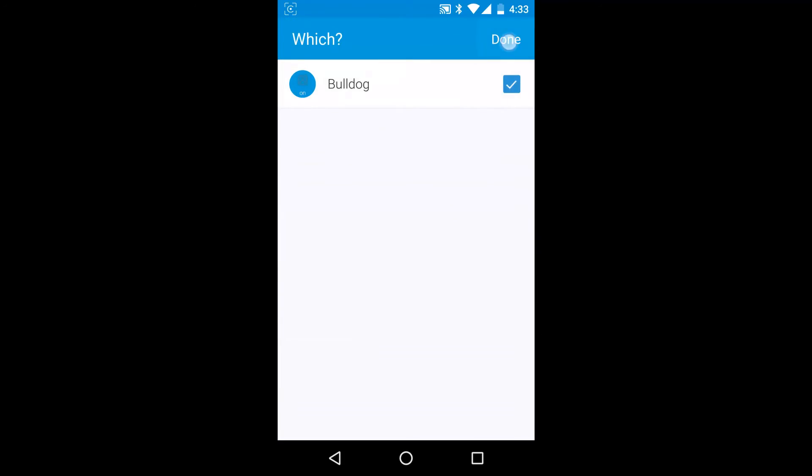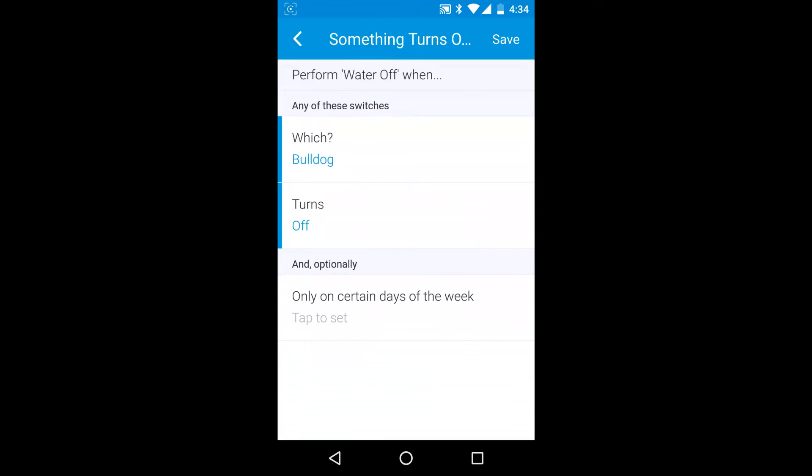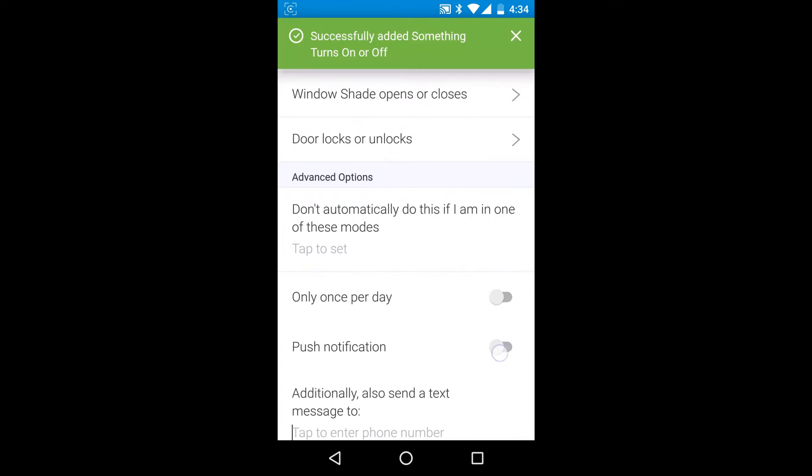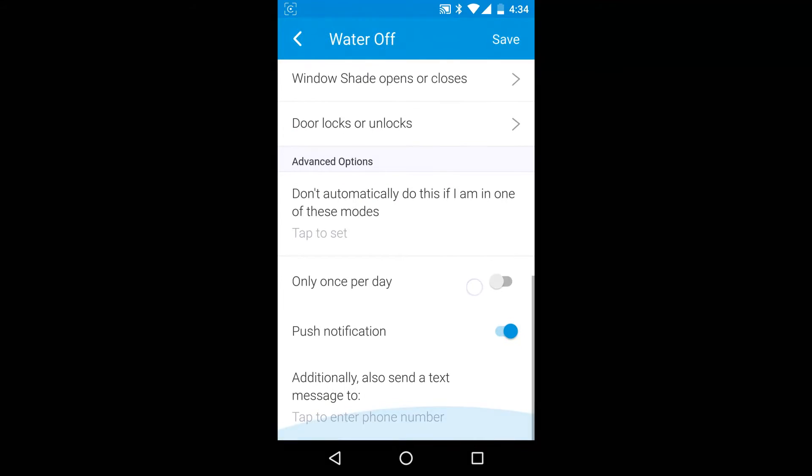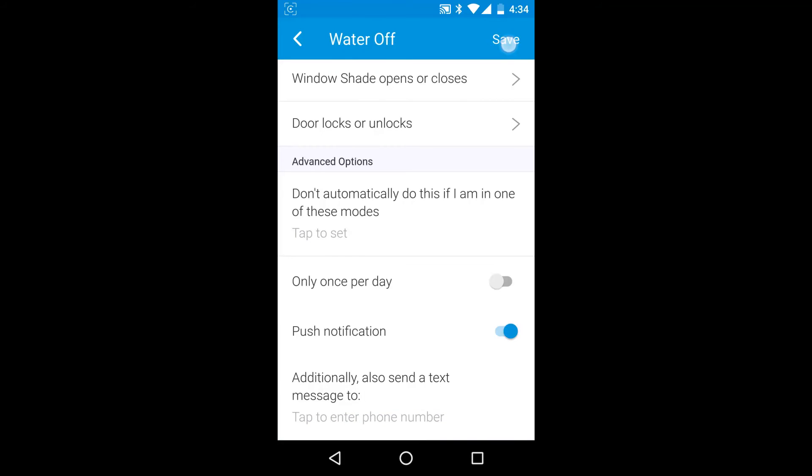Select Trigger Device, the Bulldog. Change Turns On to Turns Off. Then tap Save. Turn on the Push Notification and then tap Save again.